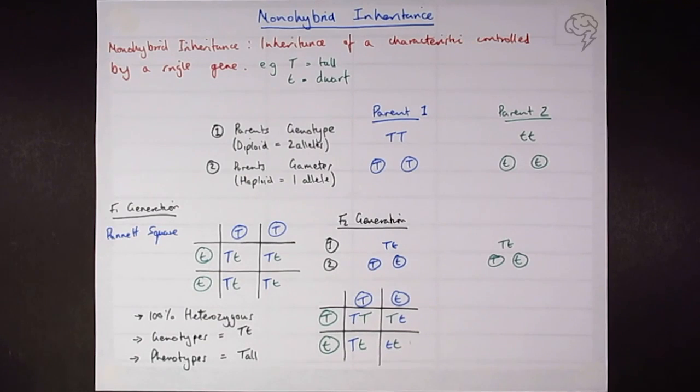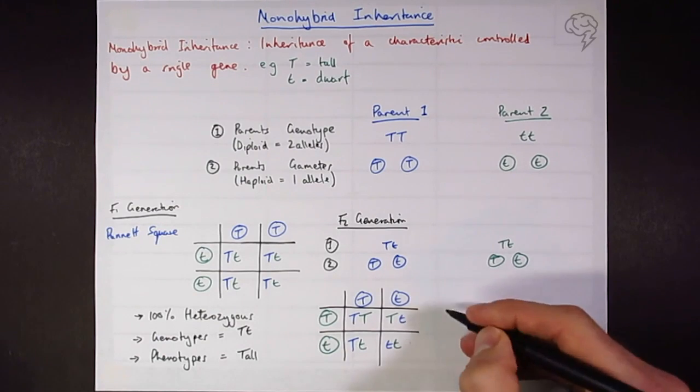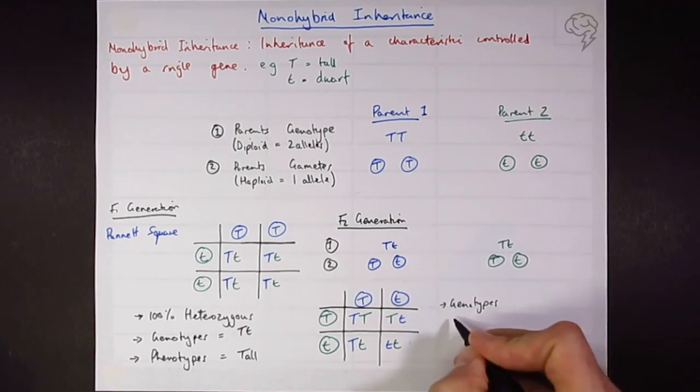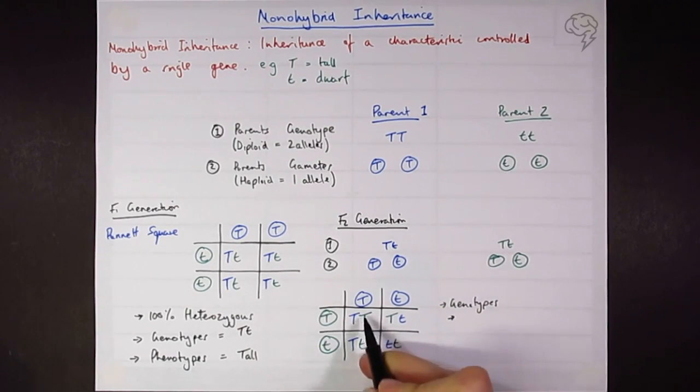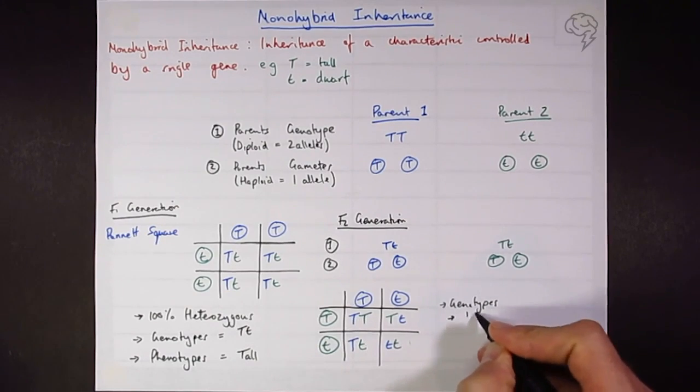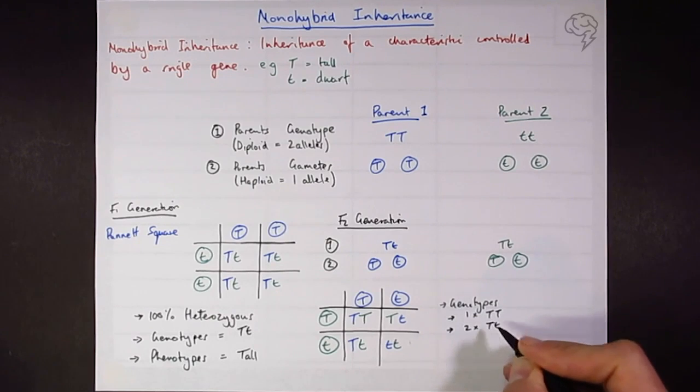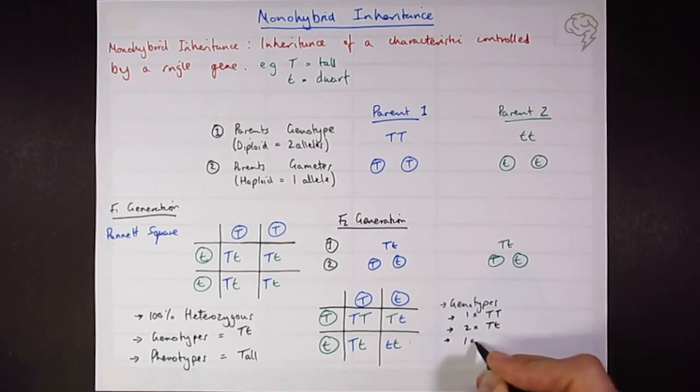So now we need to look at what the F2 generation brings us. So we're going to put the genotypes. Well, let's look at this. We've got one homozygous dominant. We've got two heterozygotes. And we've got one homozygous recessive. So what are we then about the phenotypes?